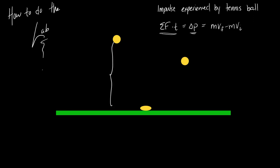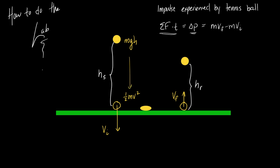The tennis ball started from some starting height, then recoiled off the ground to some recoil height. You need to figure out how fast the ball was going when it reached the ground — that's the initial velocity — and then how fast the ball left the ground — that's the final velocity. You have a variety of methods; we've learned three. The fastest is probably conservation of energy. Use conservation of energy to figure out both the initial and final velocities.